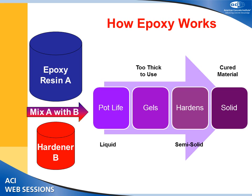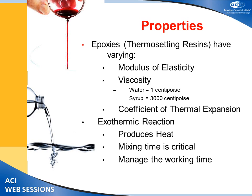Once they are mixed, epoxies have a defined pot life — they will be fluid for a certain amount of time, then go through a gelling process, transform into semi-solid, and once fully cured become a solid material. Epoxies are thermosetting resins formulated to acquire different properties, including different moduli of elasticity. One thing that comes up very often when discussing epoxies is viscosity — the ability of the material to flow.